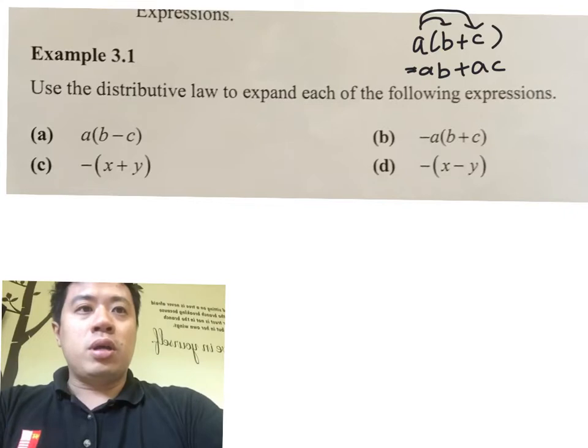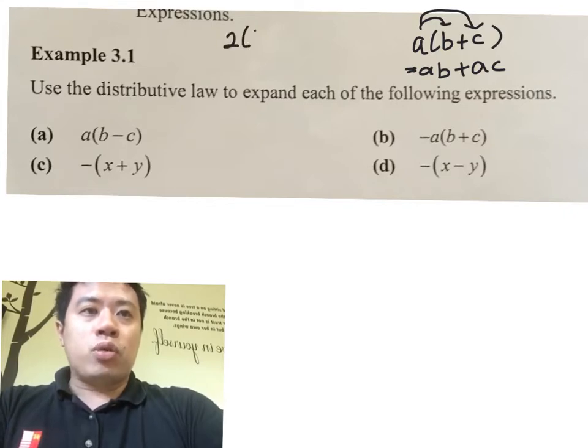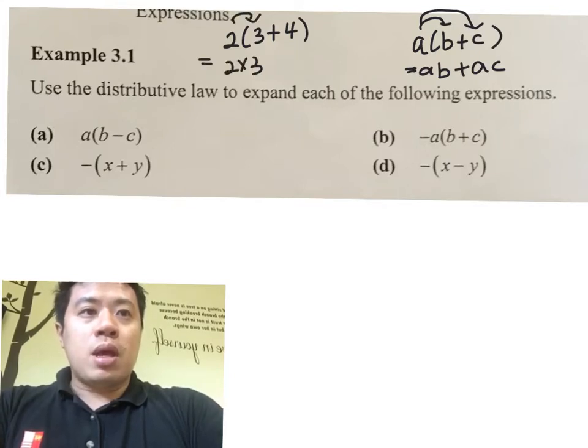For example, with numbers, you have 2 bracket 3 plus 4. You know this is the same as 2 times 3 plus 2 times 4.